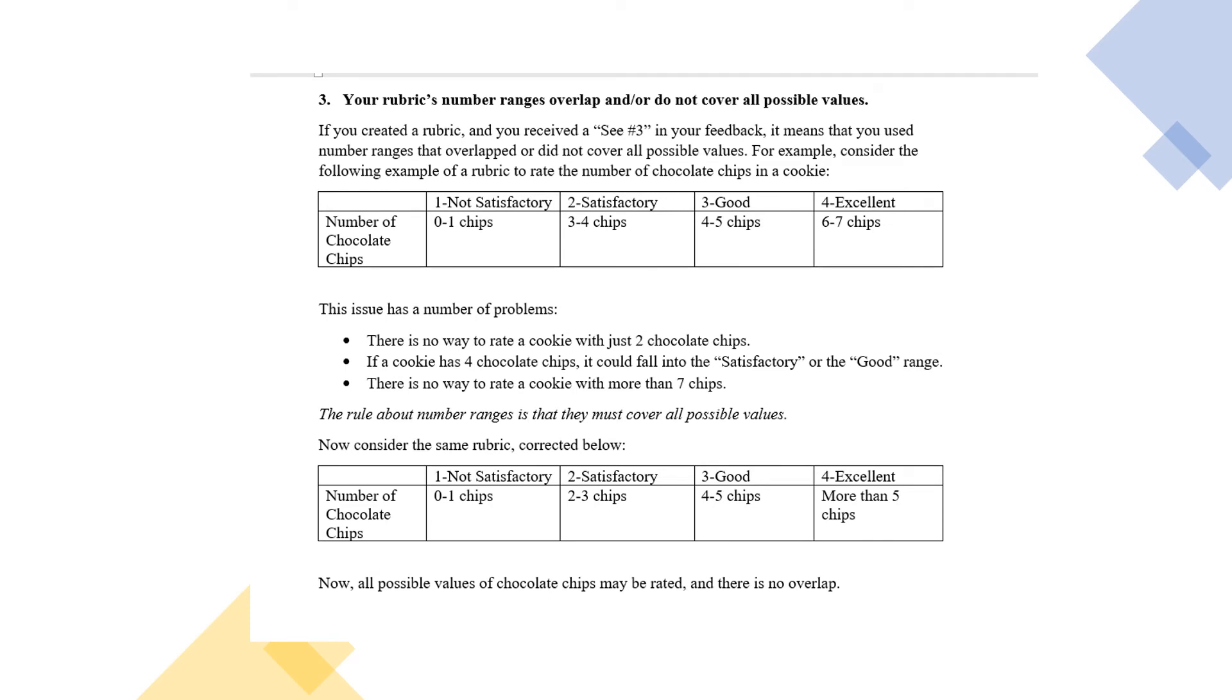If you receive an error message three, it means that your rubric's number ranges overlap or do not cover all possible values. Let's see what this means. Suppose we were trying to assess the number of chocolate chips.